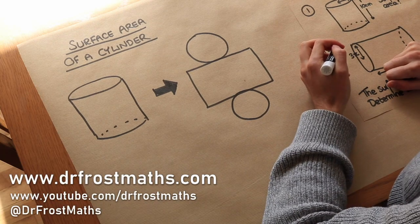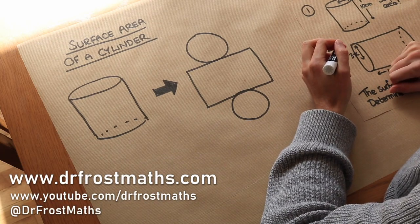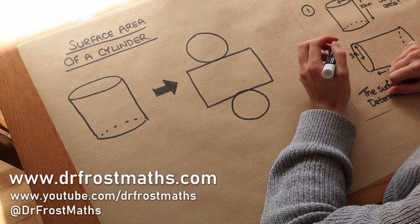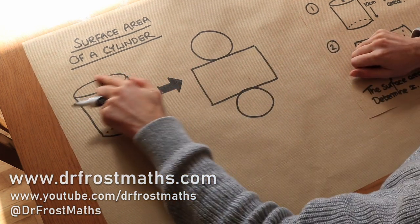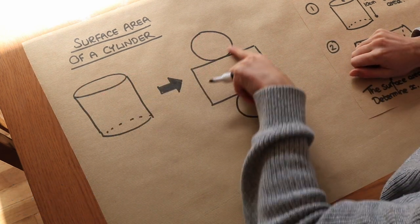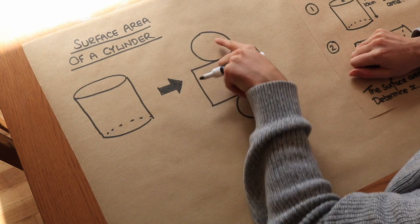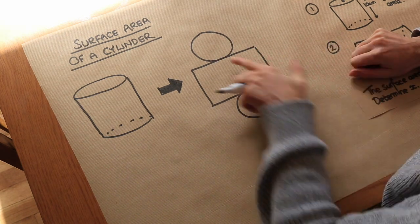Hello and welcome to this video on the surface area of a cylinder. In previous videos we saw that we could find the surface area of a solid by finding the total area of the net of that solid.